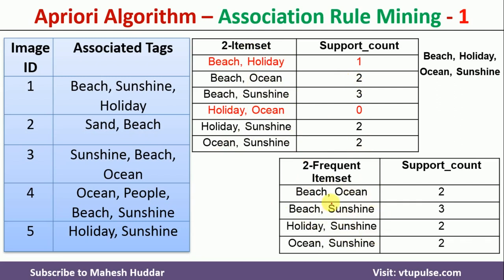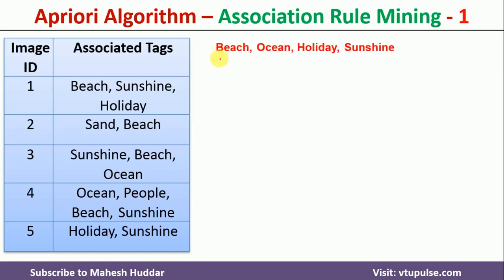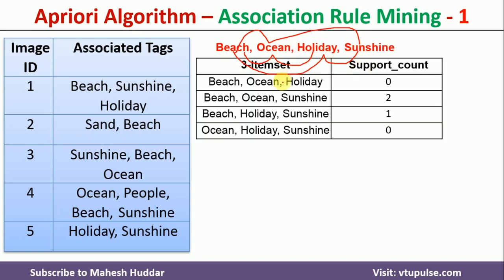Next, we find the distinct items in the 2-frequent itemsets: beach, ocean, sunshine, and holiday. Using these four distinct items, we write the 3-itemset candidates: beach-ocean-holiday, beach-ocean-sunshine, beach-holiday-sunshine, and ocean-holiday-sunshine. These are the four combinations I have written.